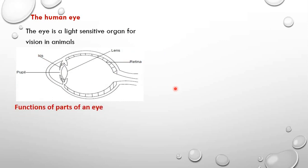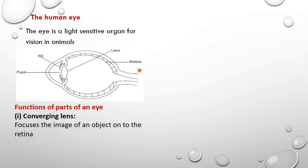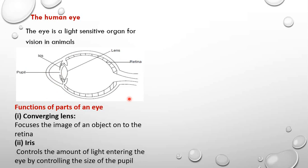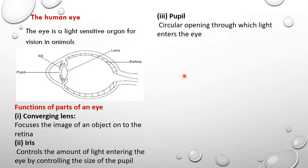Let's begin by looking at the function of the lens. That's the converging lens. That lens focuses the image of an object onto the retina. We also have what you call the iris, and the iris controls the amount of light entering the eye by reducing the size of the pupil. The pupil is a circular opening through which light enters the eye. Then the retina is the light sensitive part where the image is formed.